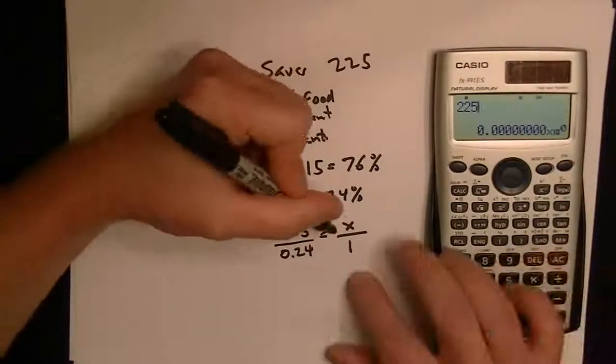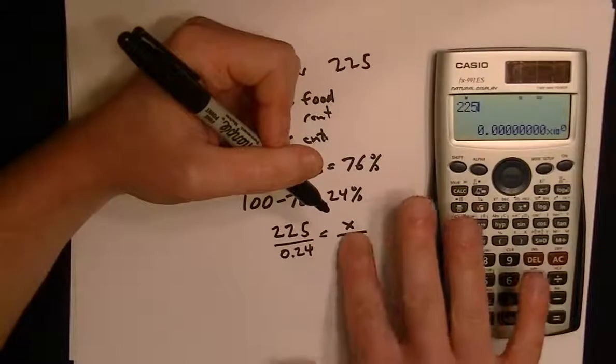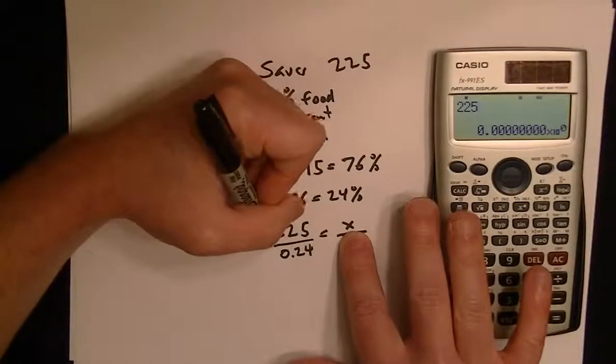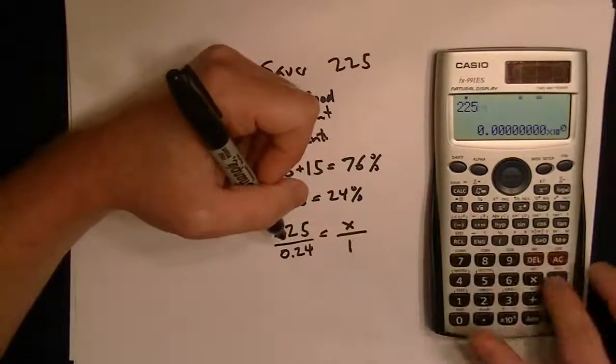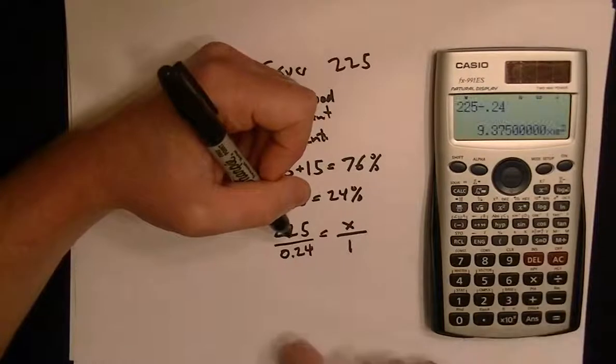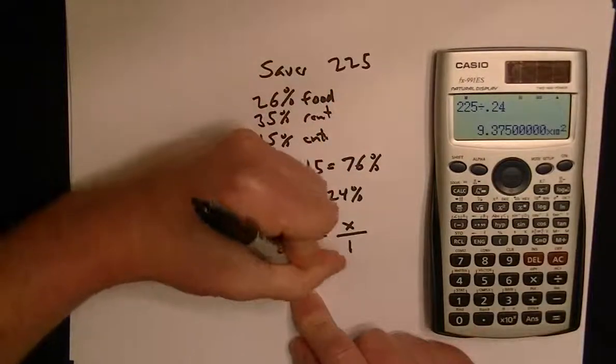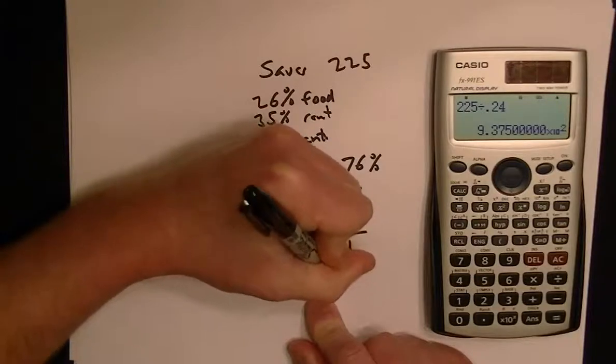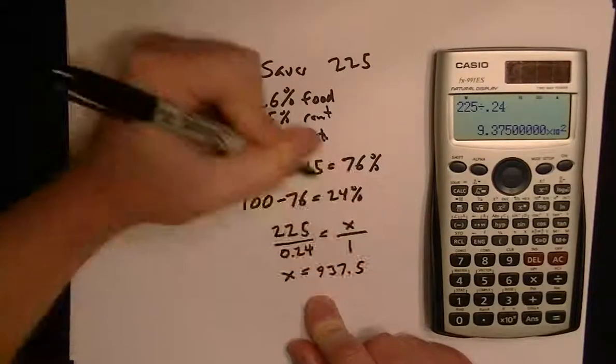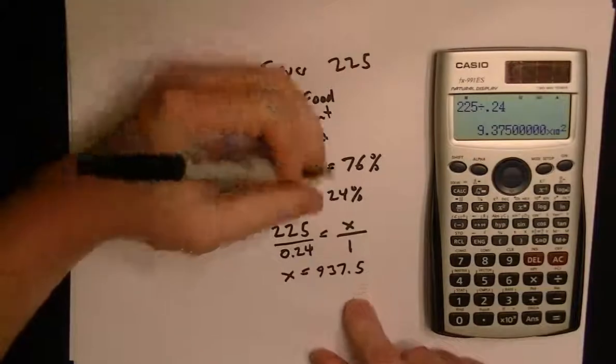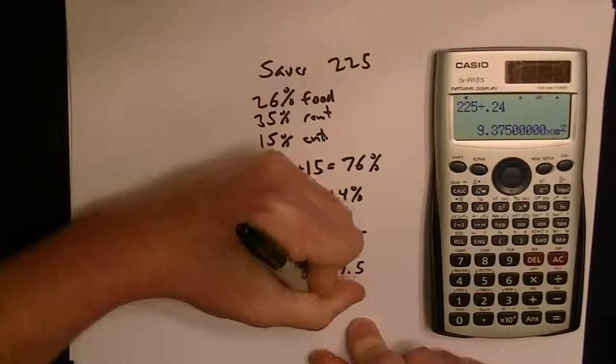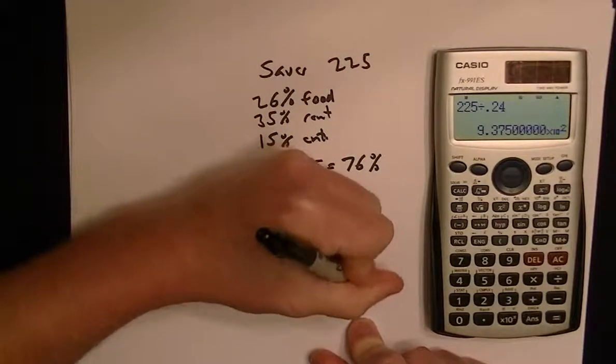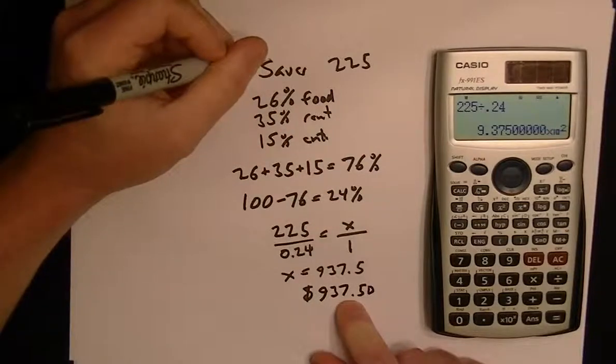So to solve for x, because you're dividing by 1, it's just x on that side. So it's really, the answer's already here, 225 divided by 0.24, and in this case, that gives us x equals $937.50. So if you want to put it in terms of money, that's how much he gets paid.